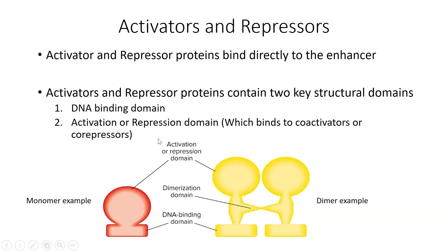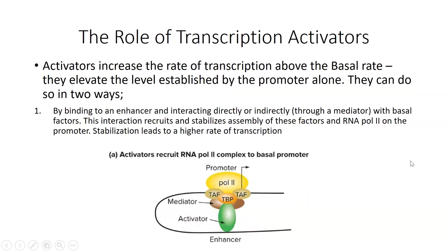That domain is involved in influencing the rate of transcription from the promoter. Activators and repressors can be monomers — one protein subunit — or they can be dimers. Let's start with activators and how they carry out their function. An activator is a protein that binds to the enhancer, and there are two main ways it can increase the rate of transcription from a promoter.